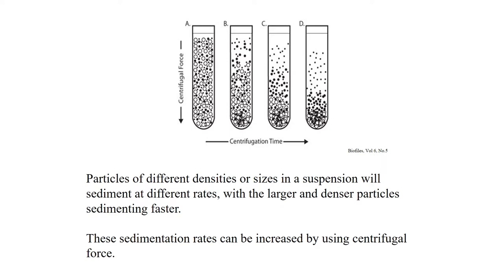In the rainy season, especially in rural areas, water becomes very muddy. Villagers add alum stones to clarify the water. The alum stones increase the molecular weight of the floating particles, causing them to settle down. The basic principle here is gravitation — when gravitational force alone is insufficient to settle floating particles, we increase the effective gravitational force to make those particles settle.